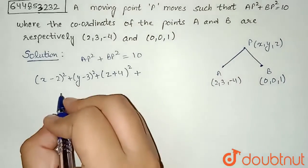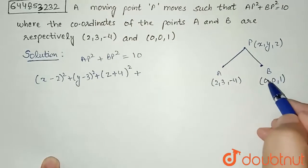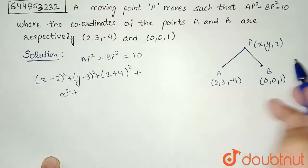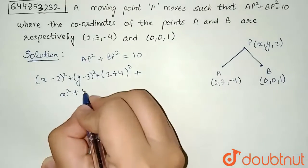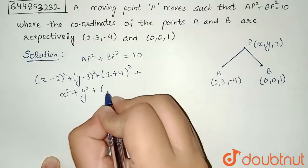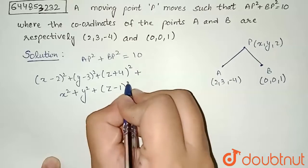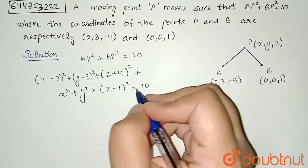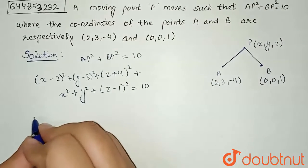Now, the value of BP² I can write as (x - 0)², so that is x². Similarly, (y - 0)² will be y² and third term will be (z - 1)² equal to 10. Now, let us simplify this expression.